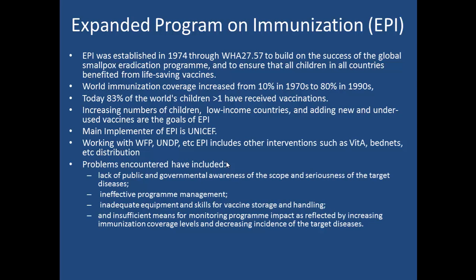Within the UN, EPI works with organizations like the World Food Program and UNDP, but also with other organizations such as Vitamin Angels that distribute vitamin A, and various malaria organizations that distribute bed nets. There are a number of problems that have been encountered: lack of public government awareness, ineffective program management, inadequate equipment to deliver vaccines, massive structural issues with distribution and storage, cold chain problems, and insufficient means of monitoring the program. Even though this program has been around for nearly half a century, EPI still has many issues — and pretty much any global health program will face challenges like these for decades.